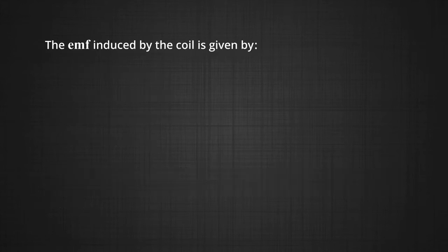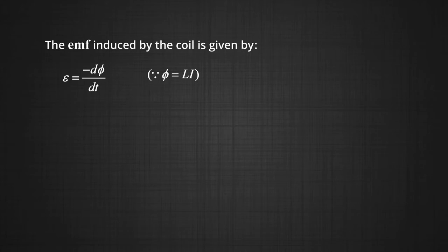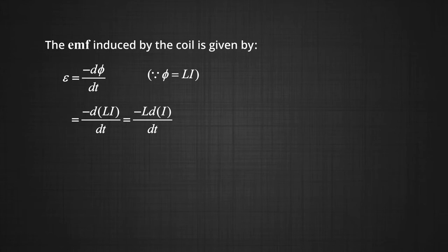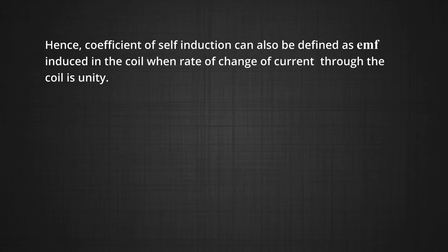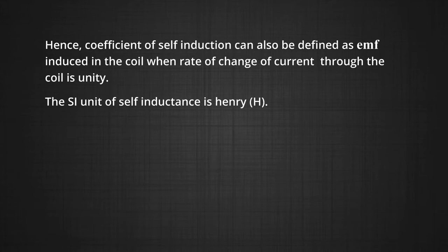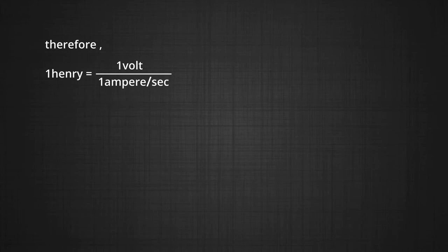The EMF induced by the coil is given by E equals minus d phi by dt. Phi is equal to L into I, therefore EMF E is equal to minus d over dt of LI, equal to minus L di by dt. If di by dt is equal to 1, then the induced EMF E is equal to minus L. Hence, the coefficient of self-induction can also be defined as the EMF induced in the coil when the rate of change of the current through the coil is unity. The SI unit of self-induction is Henry, represented by H. L is equal to minus E upon di by dt, so 1 Henry equals 1 volt per 1 ampere per second, or 1 Henry equals 1 volt second per ampere.